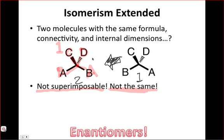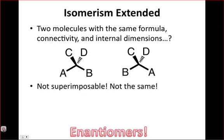An interesting thing about enantiomers is that even though they're technically not the same compound, they do display a lot of the same properties. In terms of reactivity and molecular orbitals, the molecular orbitals and things of that nature are identical in energy. The only difference is that the appearance of the molecular orbitals are mirror images of each other. Because all of the internal distances are the same in enantiomers, all of the chemistry associated with these groups is exactly the same, because their influence on one another is exactly the same in both molecules.